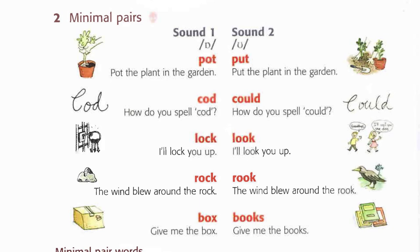2C again: Pot the plant in the garden. Put the plant in the garden. How do you spell cod? How do you spell could? I'll lock you up. I'll look you up. The wind blew around the rock. The wind blew around the rook. Give me the box. Give me the books.